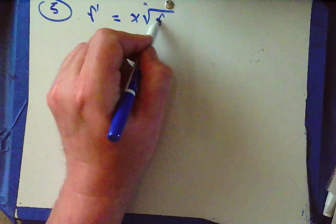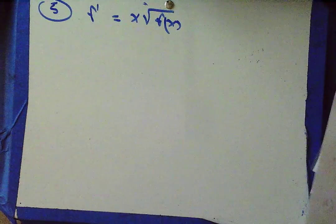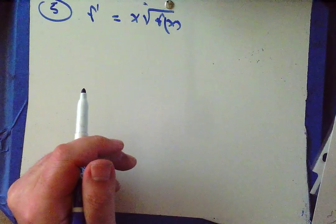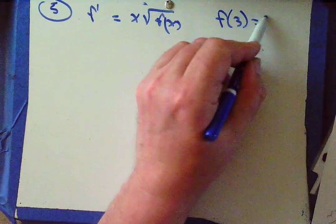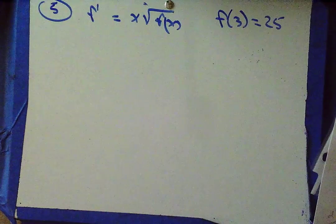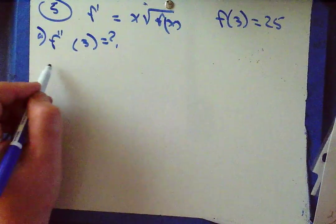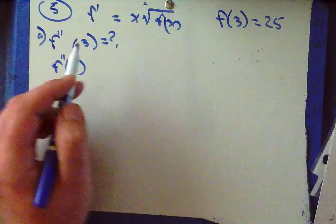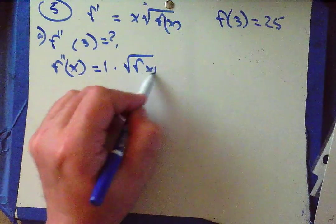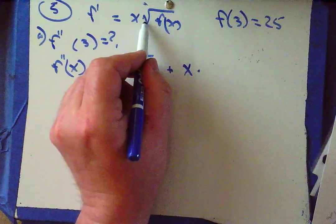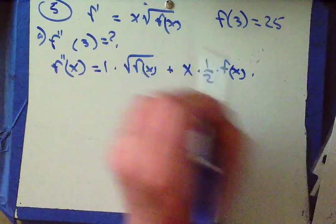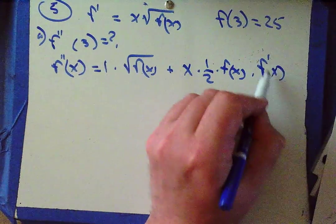That was problem number 4. Problem 5: let f be the function satisfying f′(x) equals x times √(f(x)), where f(3) equals 25. Find f″(3) — that's part a. So f″(x): I need the product rule. That's 1 times √(f(x)) plus x times the derivative of the outside function (one half times f(x) to the negative one half) times the derivative of the inside function, f′(x).